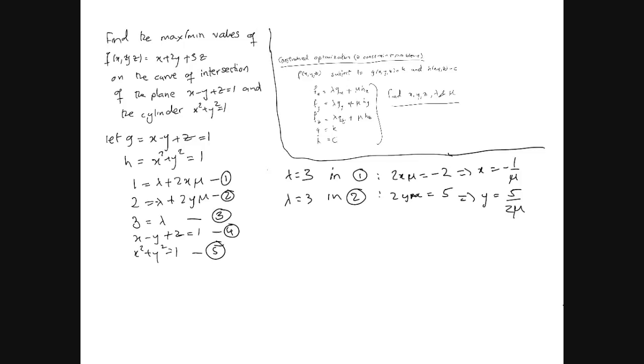We've got these relationships. Now if we substitute, let's call this 6 and 7, substitute 6 and 7 in 5. It's going to give us 1 over mu squared plus 25 over 4 mu squared equals 1.